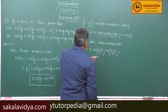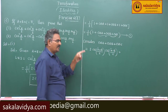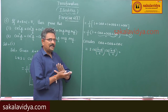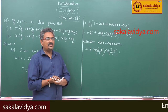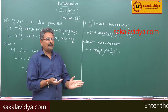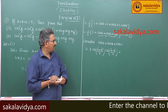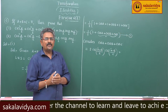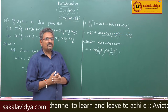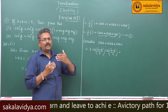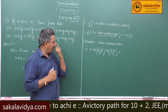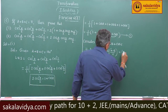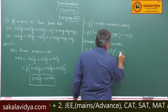Keeping in view this, we need to change cos c in terms of cos a plus b by 2. Since a plus b plus c is equal to 180 degrees, cos of a plus b by 2 becomes sin c by 2. So cos c must be expressed in terms of sin c by 2, which can be written as 1 minus 2 sin squared c by 2.